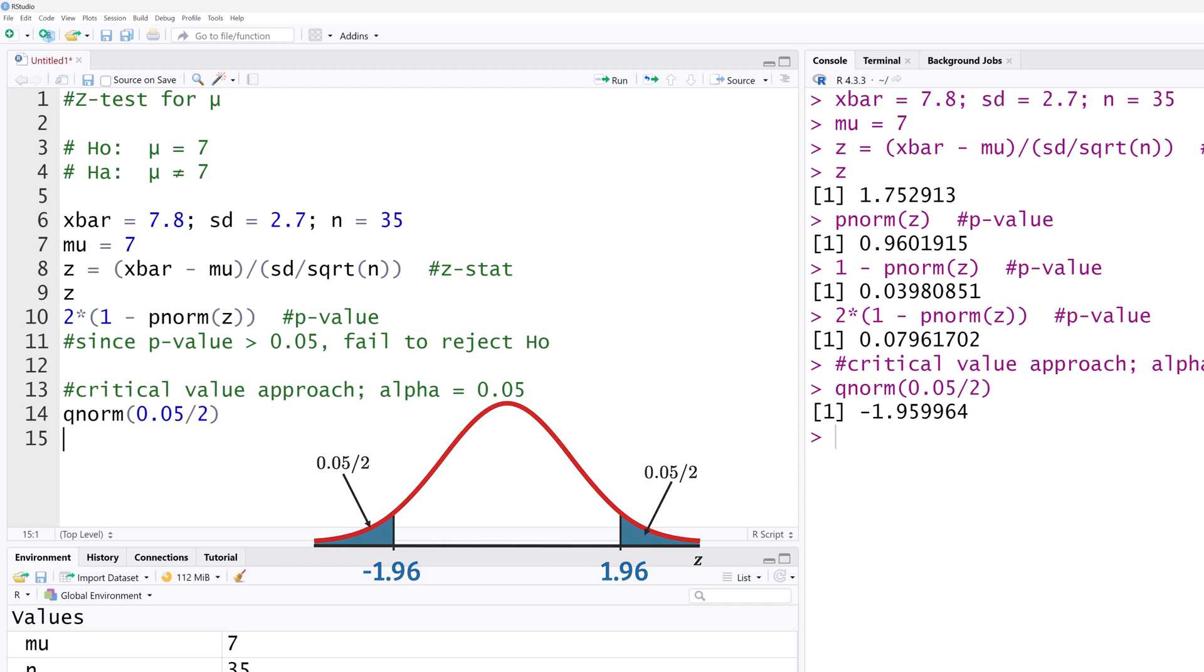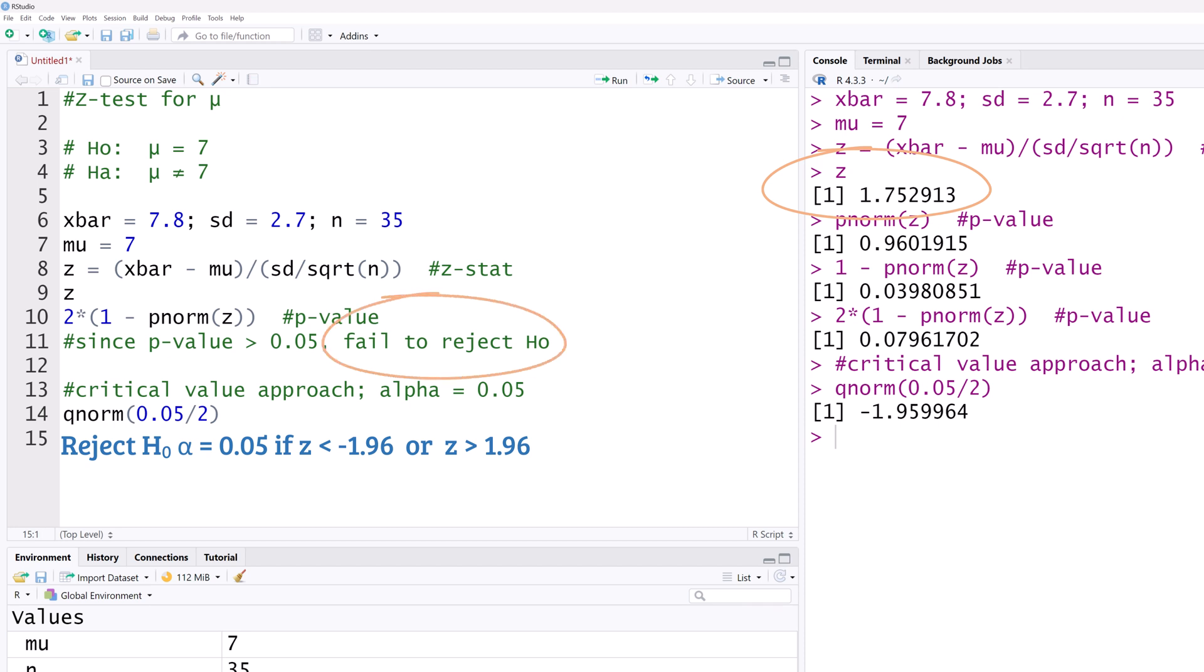This means, using the critical value approach, we should reject the null hypothesis at alpha equals 0.05 if a Z stat is less than negative 1.96, or if it is greater than positive 1.96. Since this Z stat is not in the critical region, we do not reject the null hypothesis, and the decision is consistent with the decision using P value approach.